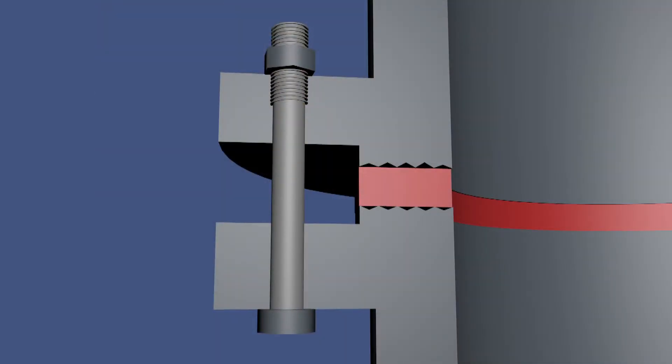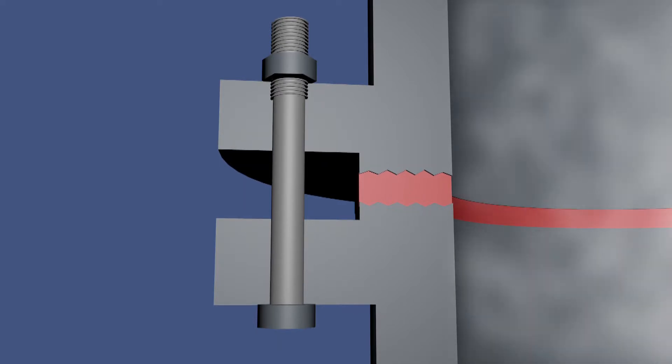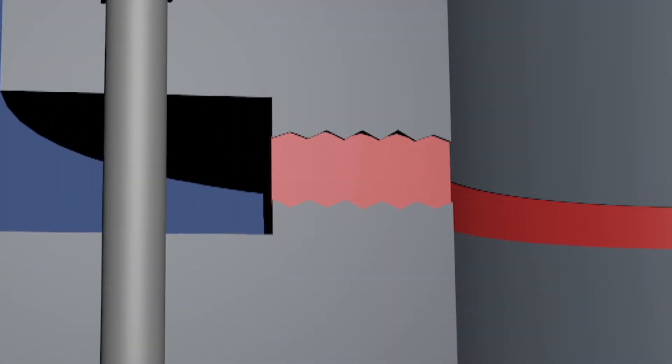As the bolts are tightened, the flange face is loaded against the gasket surface. As this force increases, the gasket material will yield into the microscopic crevices of the flange face resulting in a seal.